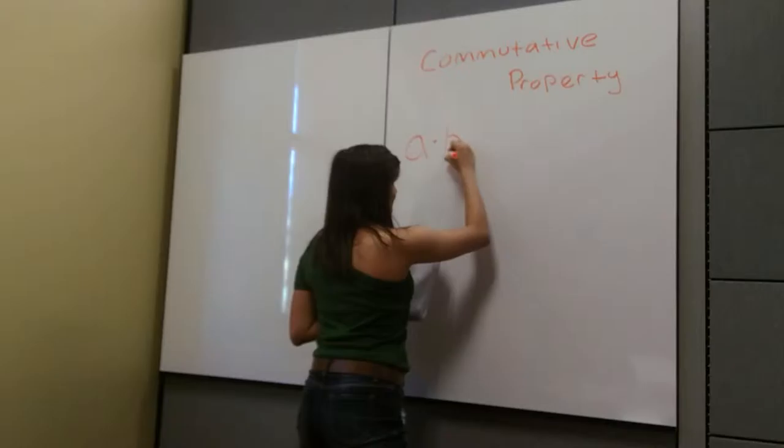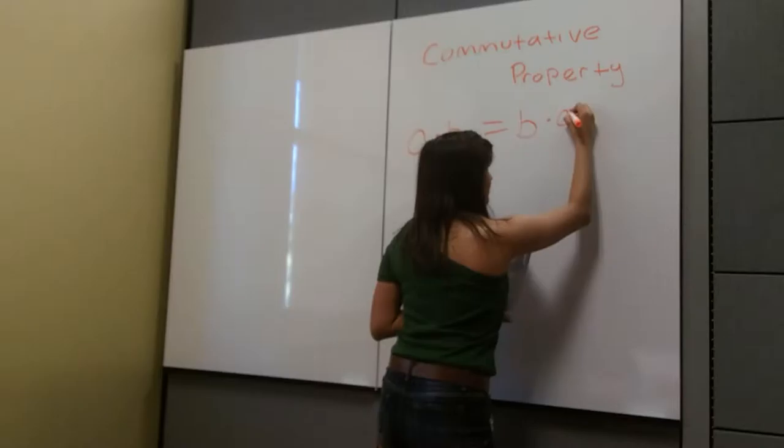Commutative property means that A times B equals B times A.